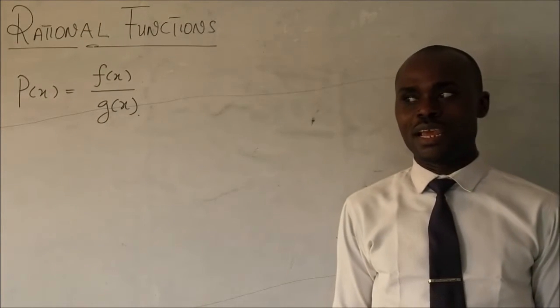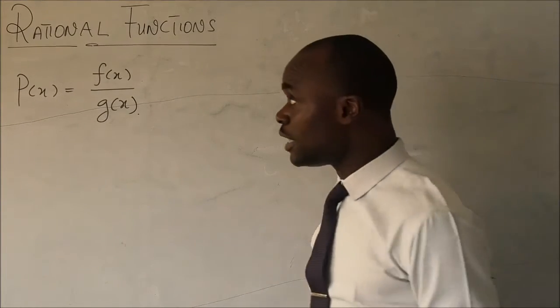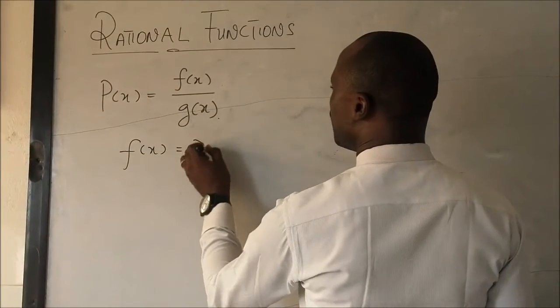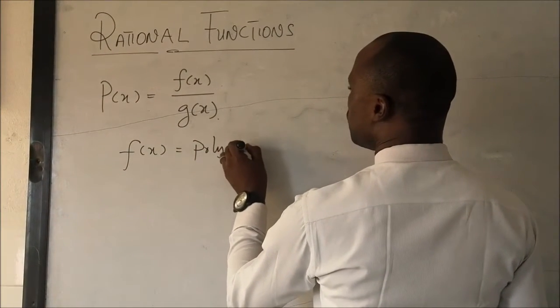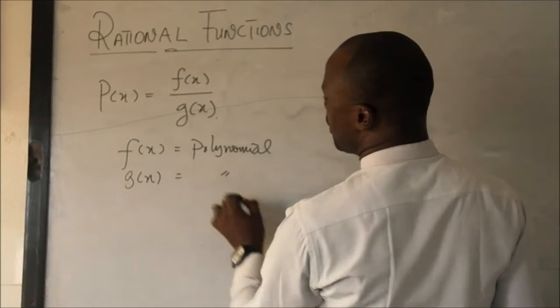Interestingly, it's always okay when they are polynomials, it may not be polynomials all the time. But generally, f of x can be considered as a polynomial, and g of x also considered as a polynomial.